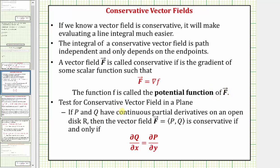The test for a conservative vector field in a plane is stated here. If P and Q have continuous partial derivatives on an open disk R, then the vector field F with components P comma Q is conservative if and only if the partial of Q with respect to x equals the partial of P with respect to y.